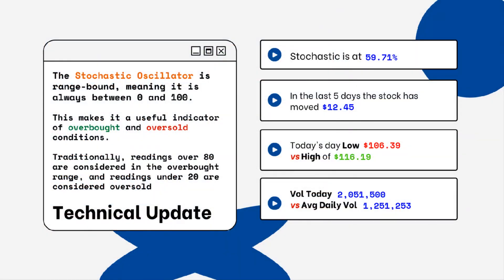You can see on the right side where the stochastic level is on this particular stock. This is a technical update because you want to look for overbought and oversold conditions. Readings over 80% are considered overbought, and readings below 20% are considered oversold. You want to be aware of this when looking at a particular stock.